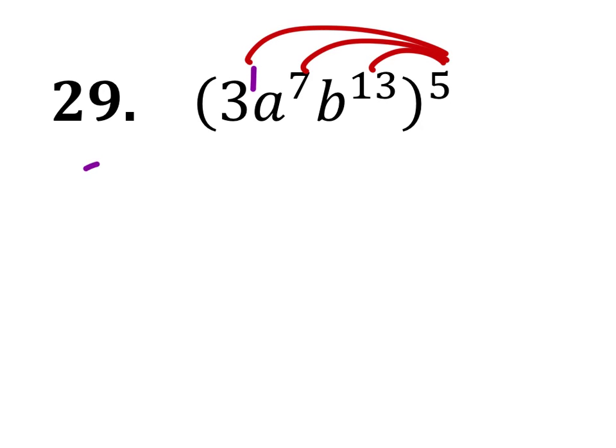So, this would be 3 to the power of 1 times 5, a to the power of 7 times 5, and b to the power of 13 times 5.